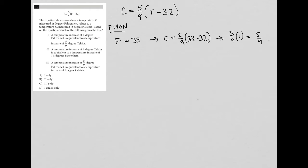Now if I increase that by one, now I have F equals 34. What happens then? That becomes C equals 5/9 times 34 minus 32, which becomes 5/9 times two, which is ten ninths.